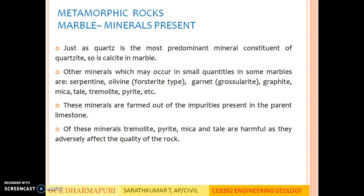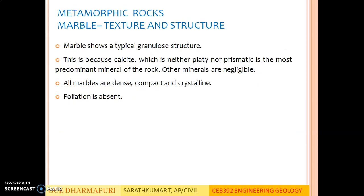Of these minerals, tremolite, pyrite, mica and talc are harmful as they adversely affect the quality of the rock. Texture and structure of marble: Marble shows a typical granular structure. This is because calcite, which is neither platy nor prismatic, is the most predominant mineral of the rock. Other minerals are negligible. All marbles are dense, compact and crystalline. Foliation is absent.